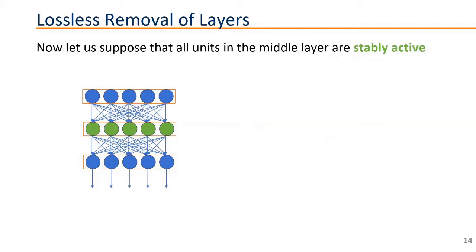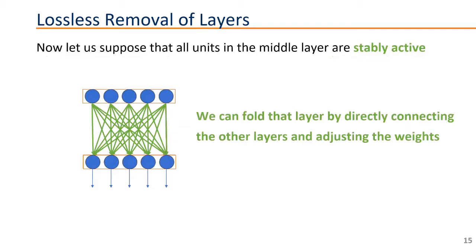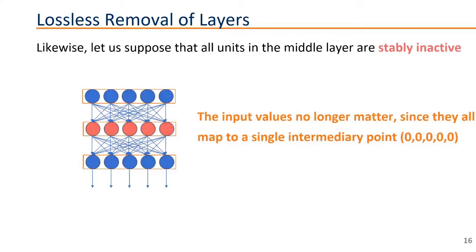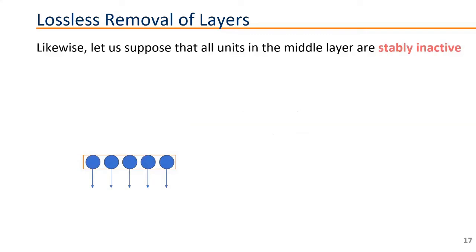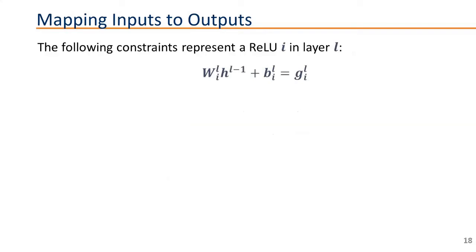Now let's look at some more extreme examples. Let's say that all units in a given layer are stably active. If that's the case, there is no nonlinearity in this layer and we can as well directly connect its inputs to its outputs by just adjusting the weights accordingly. That's what we call folding the layer. So we're just removing one of the layers because it's stably active. If we look at the other example where all the units in a given layer are stably inactive, in that case, it means that for any inputs of the neural network, we're mapping to intermediary point 0000. And as a consequence, we can say that the neural network models a constant function and we can drop all the hidden layers in this case. Of course, that's a very extreme example. But in this case, we can collapse the entire neural network.